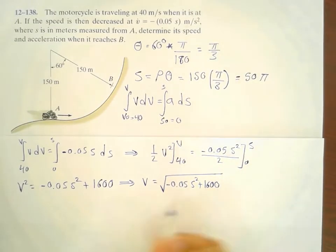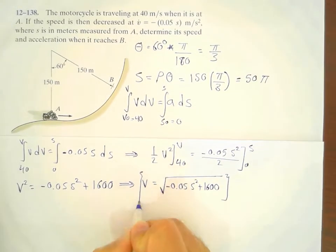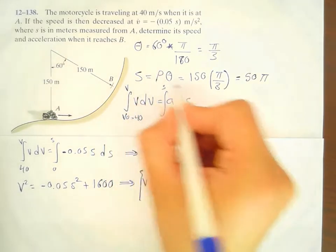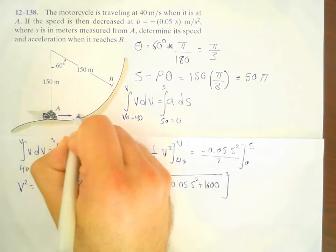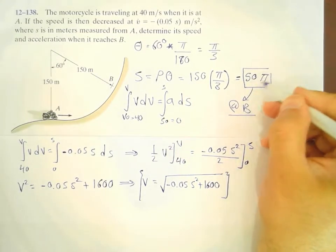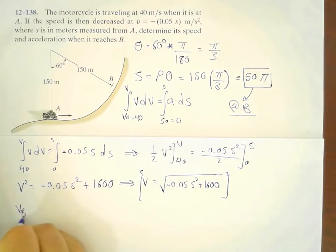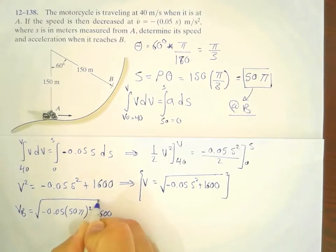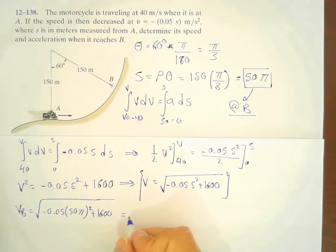Finding the velocity at any position is this relationship. So, at point B, we already knew that the distance that this motorcycle went through is this. This is at point B. So, we simply take this value and substitute it here. And V_B here would be equal to minus 0.05 times 50π squared plus 1600. And this would be equal to 19.17 meters per second. So, this is the velocity at point B.